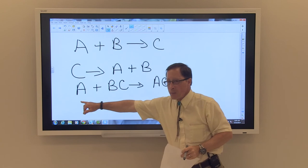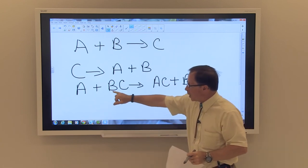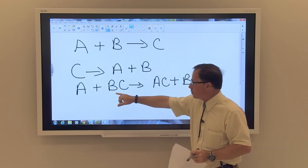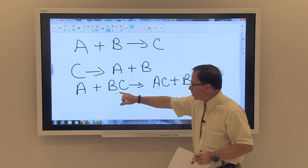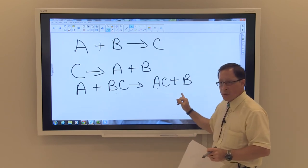In this reaction, what you see is that A, which would typically be a metal, would replace a metal ion in the BC to form AC plus B.